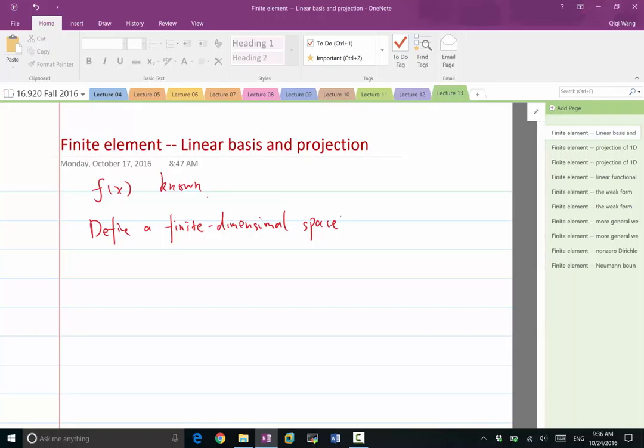and linear space means any linear combination of two functions in the space is still in the same space. So a finite dimensional space means any function